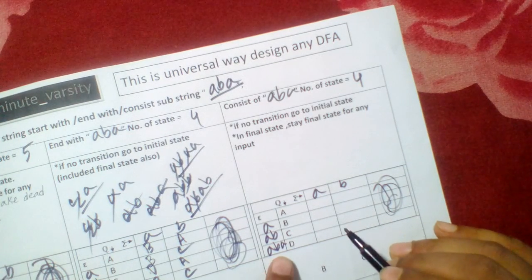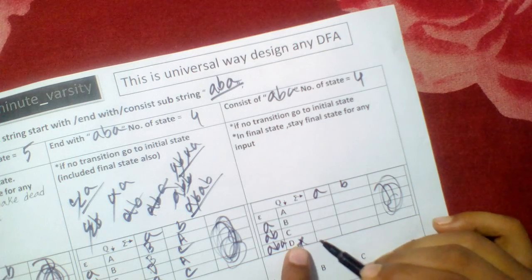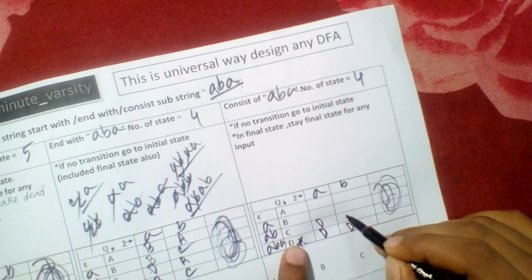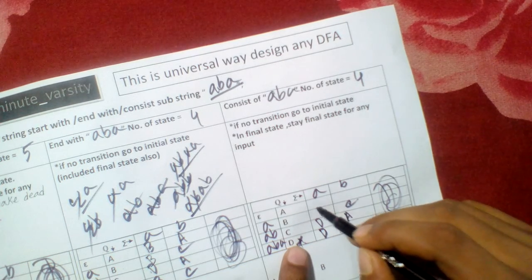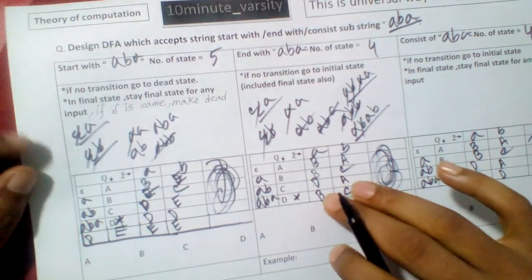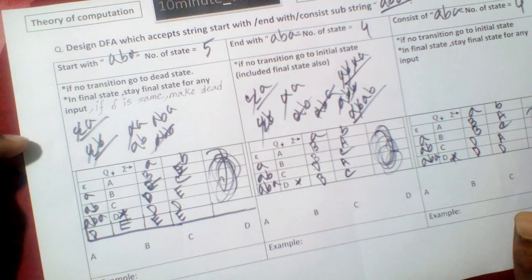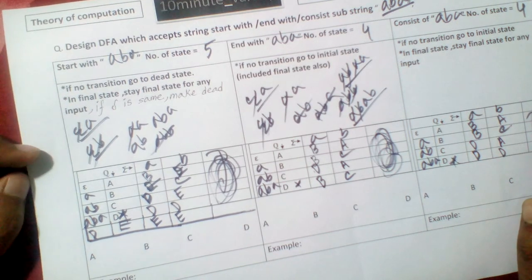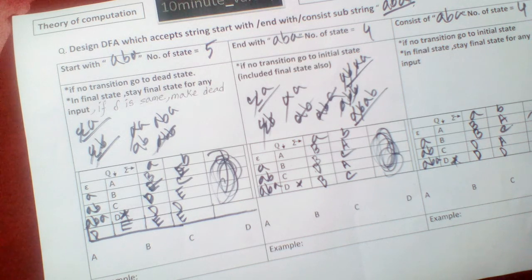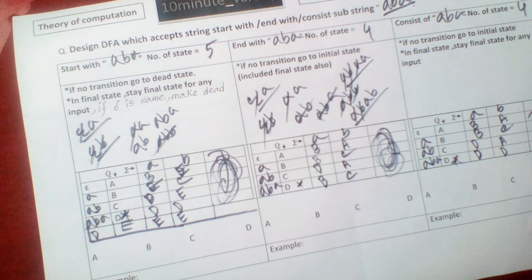For the 'consists of' problem, the only difference is that in the final state, you stay in the final state for any input. The remaining transitions are the same: states D, A, B, C, B. If you draw the transition diagram using this table, I hope it will make sense and help you clearly. You will be able to design any kind of DFA — 'starts with', 'ends with', or 'consists of'. If you have any questions or need a PDF sheet, contact me and I will help you.